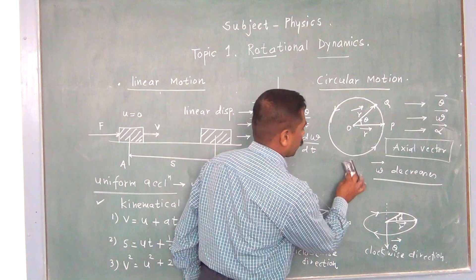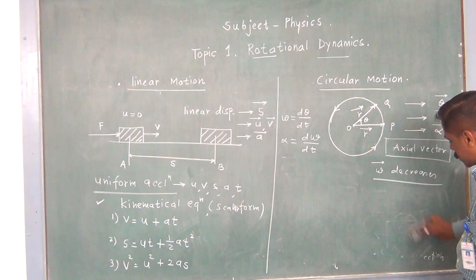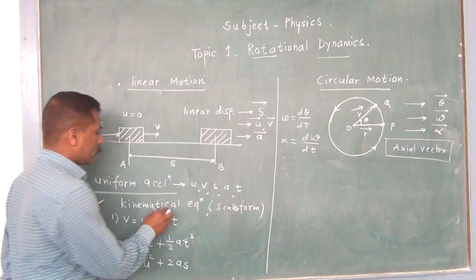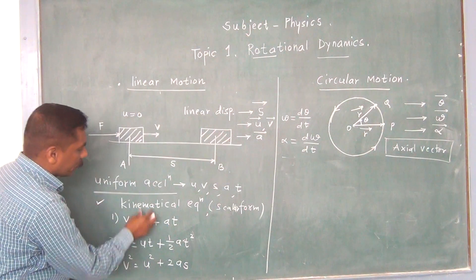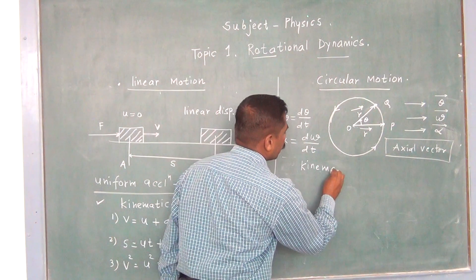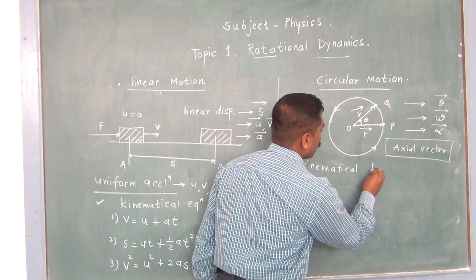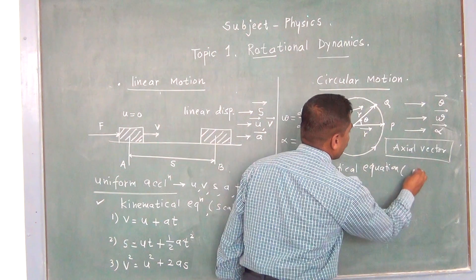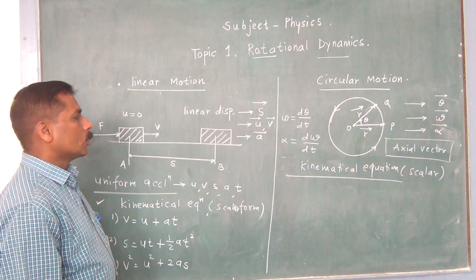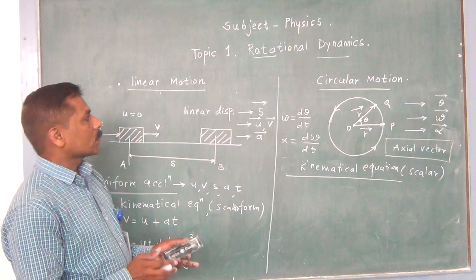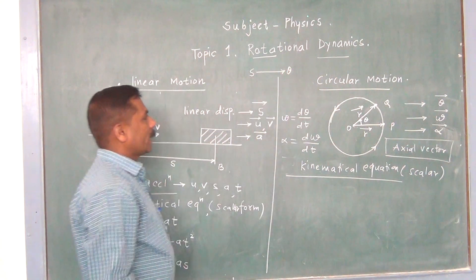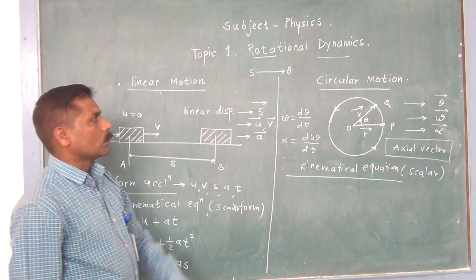We know the analogous terms, and when we consider these analogous terms we can find out the kinematical equations, which is a very important part. These kinematical equations are also given in the scalar form. You should know only the analogous terminology. S is analogous to theta; S is the linear displacement, analogous to angular displacement.